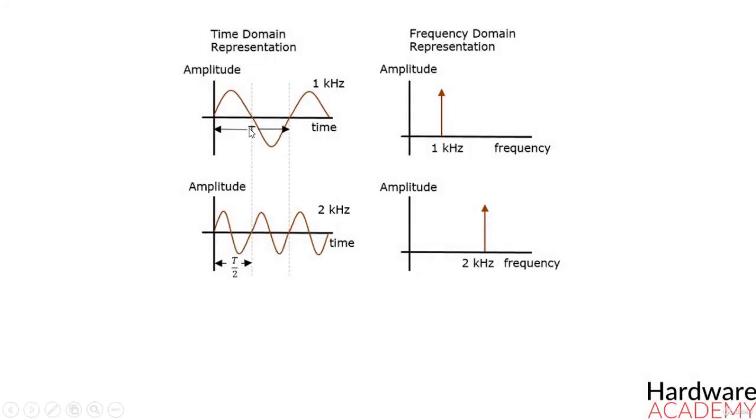Now consider two signals with 1kHz and 2kHz frequencies. Both of them are represented in time and frequency domain. Time domain analysis gives the signal behavior over a certain time period.